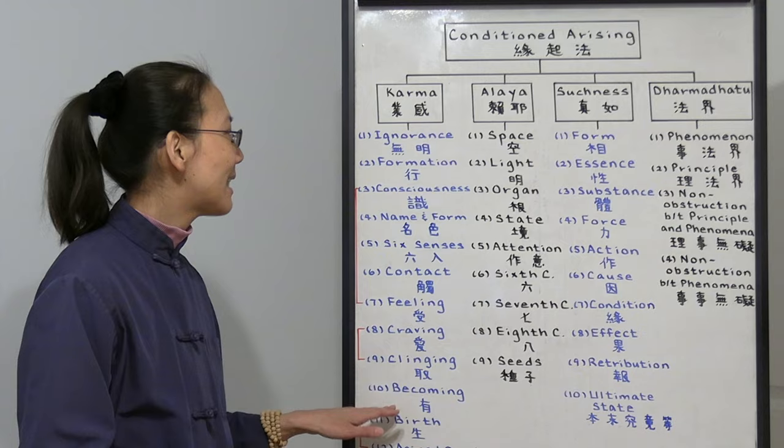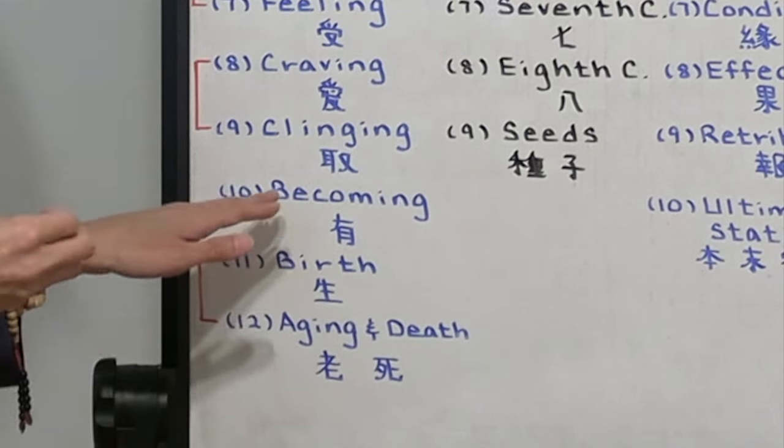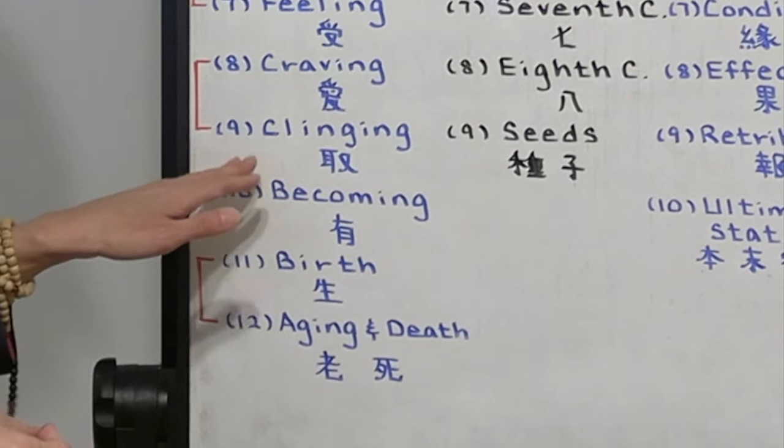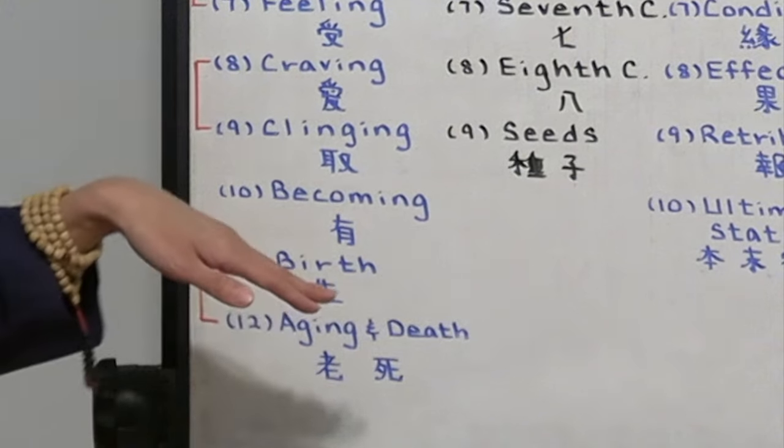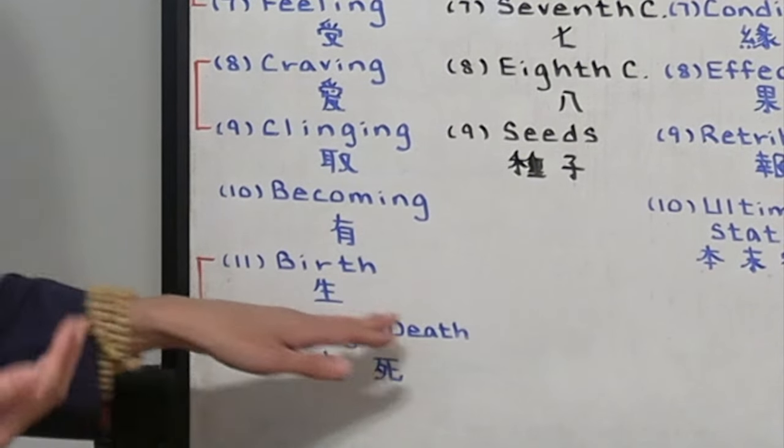A strong attachment to our love and hate. Then we will have becoming, same as formation. With karmic deeds, we will produce based on our craving and clinging. Then it starts the life process all over again. We will have birth, aging, and death.